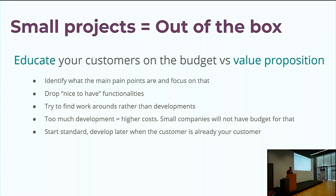You really need to identify the pain points of their current business and focus on those. Drop the nice-to-have functionalities — focus on the things that are really necessary for them to operate their business and try to fit these into the out-of-the-box Odoo Enterprise solution. Nice-to-have functionalities that might be pleasant but not crucial — if they have a big impact on the budget, it's better to tackle them later. Try to find workarounds rather than doing more developments, as this allows you to do fewer developments overall.